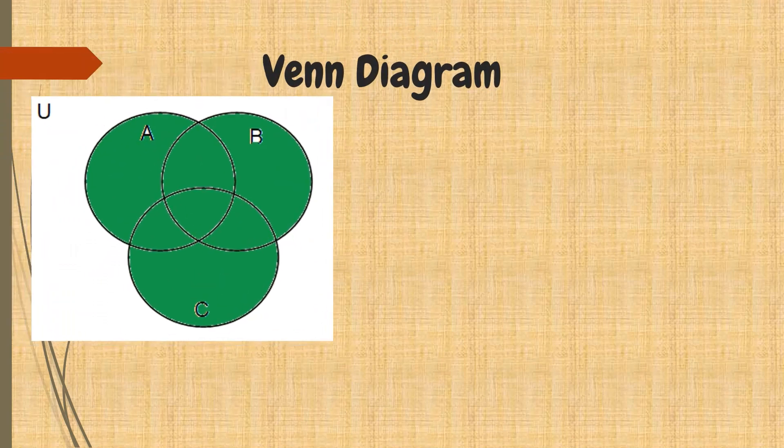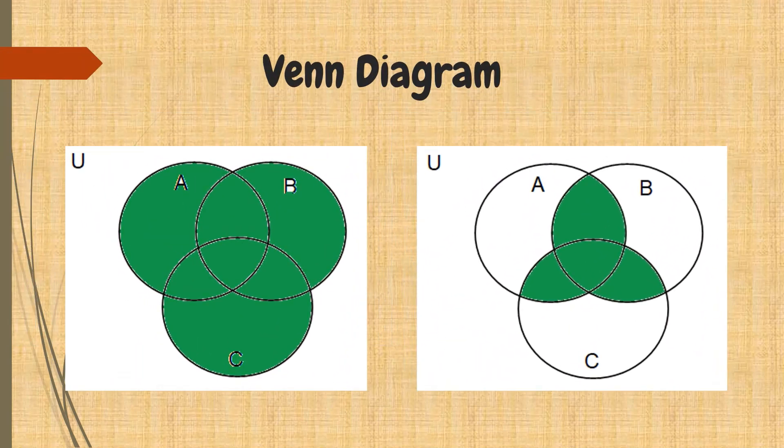So I have here two examples of Venn Diagram. The first one is consisting of set A, B, and C.